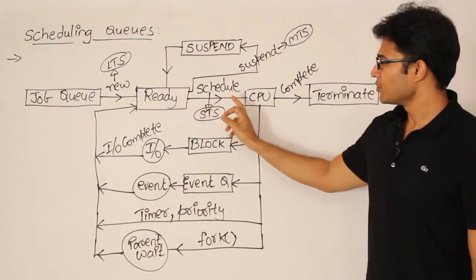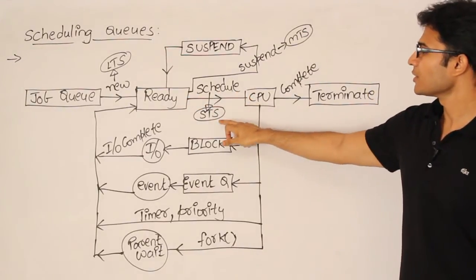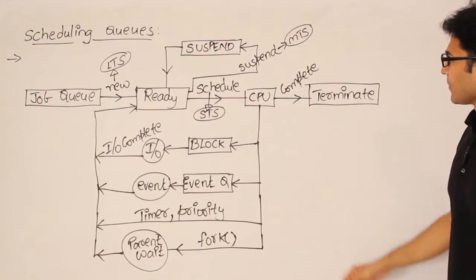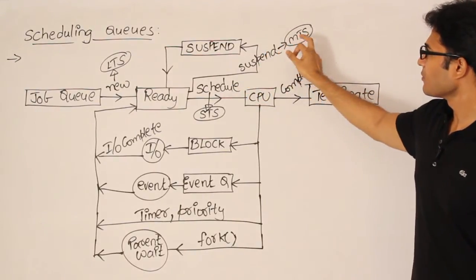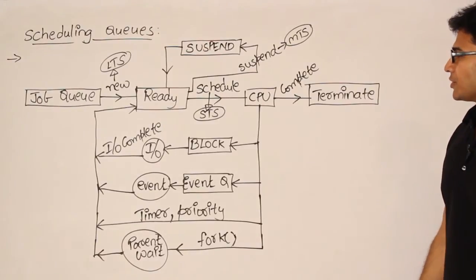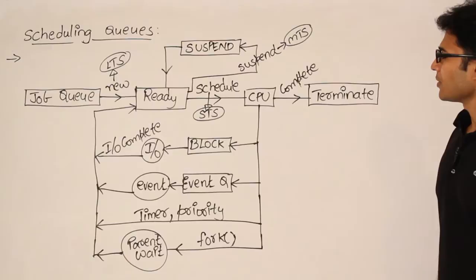And then, the process scheduling. Which means from the ready queue giving a process to the CPU is taken care by short term scheduler. And then, the suspension is taken care by this medium term scheduler. These are the various schedulers and that is where they are all coming into picture.